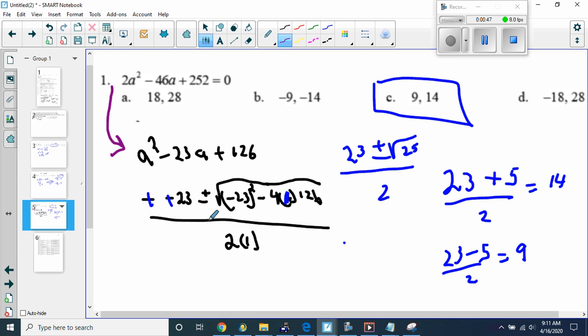And then if I put it into the quadratic formula, I'm going to get negative b plus or minus the square root of b squared minus 4ac all over 2a. When I do that, we get 23 plus or minus the square root of 25 over 2. The square root of 25 is 5, so 23 plus 5 over 2 is 28 over 2, which is 14, or 23 minus 5, which is 18 over 2, which is 9.